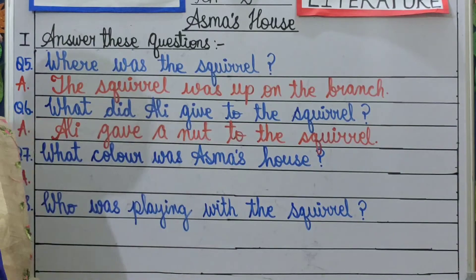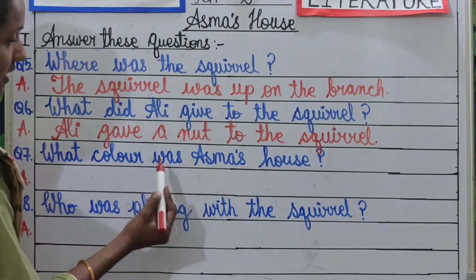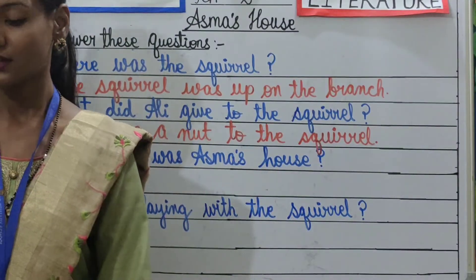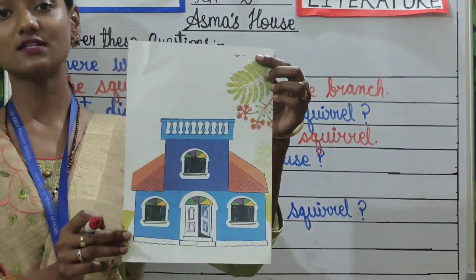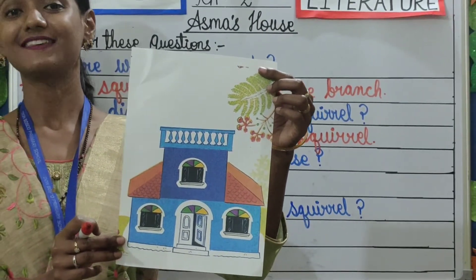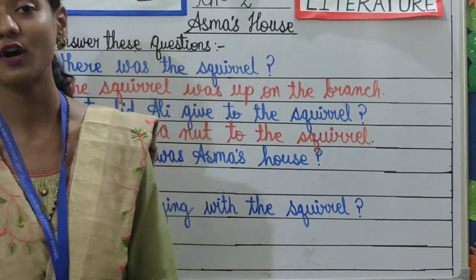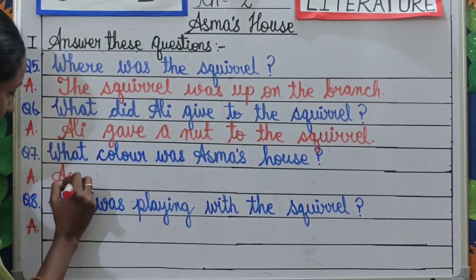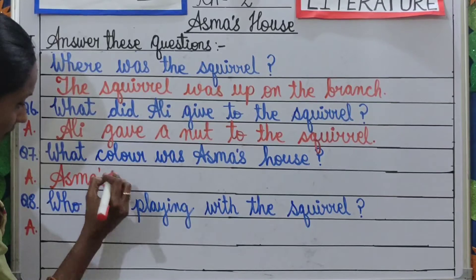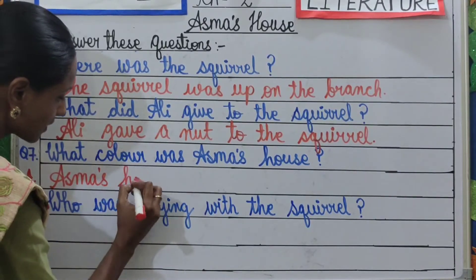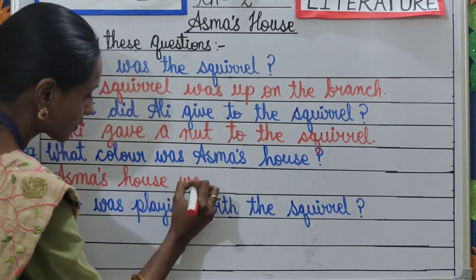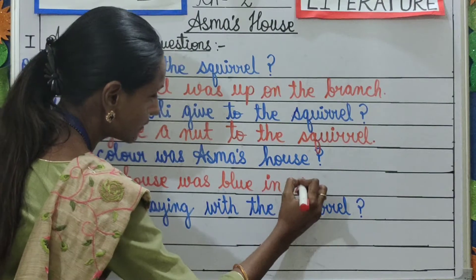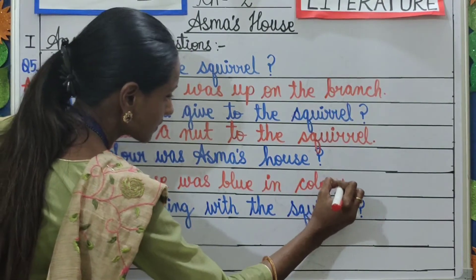Next question. Question number 7: What color was Asma's house? To answer this question, look at this picture children. What color was Asma's house? Yes, Asma's house was blue in color.